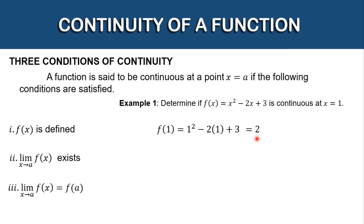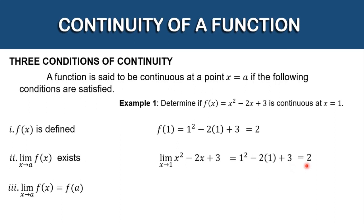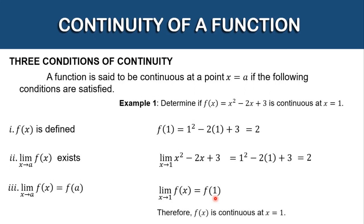For condition 2, the limit should exist. We write the limit of x squared minus 2x plus 3 as x approaches 1. By direct substitution: 1 squared minus 2 times 1 plus 3, which equals 2. So the limit exists at 2. For the third condition, the limit as x approaches 1 equals f of 1, both equal to 2. Therefore, the function f of x is continuous at x is equal to 1.